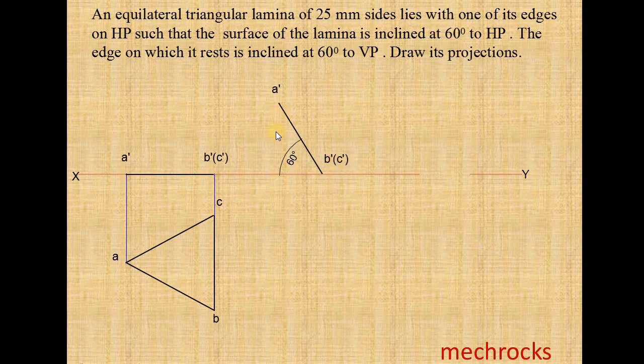Now from this A dash you draw a vertical line downward. From B dash C dash also. From this C you draw a horizontal line. From A also, from B also. Like this. Now we mark the intersection points. This is the A dash line and this is the A line. This is point A. Now this is the B dash line, this is the B line. This is point B. This is point C.